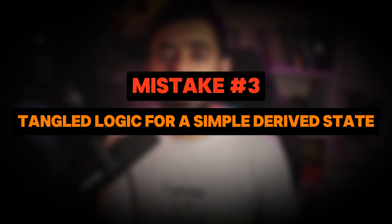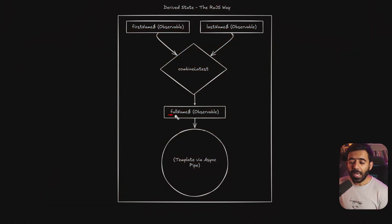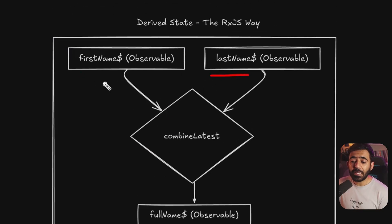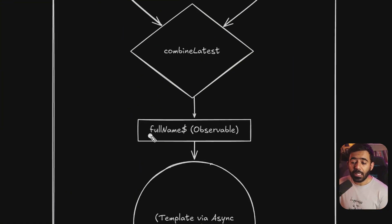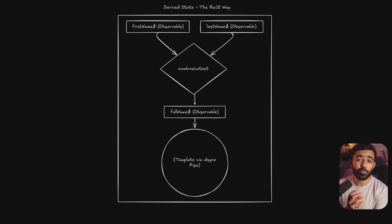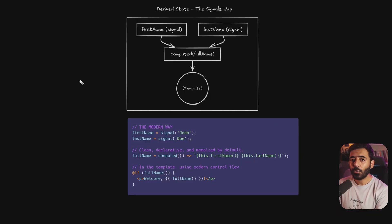Mistake number three: tangled logic for simple derived state. For example, if you need a full name based on two different observables already in your services, you'd have to use `combineLatest` to watch if either firstName or lastName changes and update the fullName observable. The template also needs the async pipe to re-render on updates. While it works, you're creating a complex stream just to concatenate two strings — the code is hard to read and can lead to redundant computations if you're not caching with something like `shareReplay`.